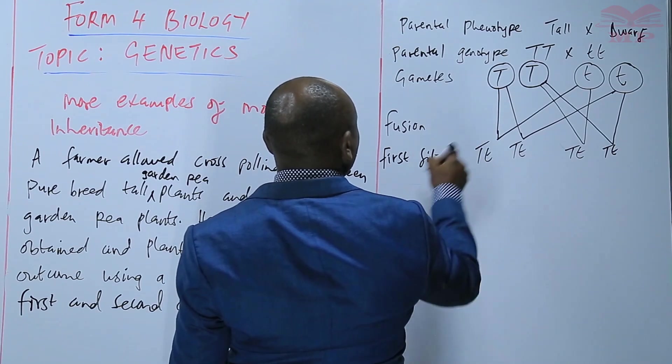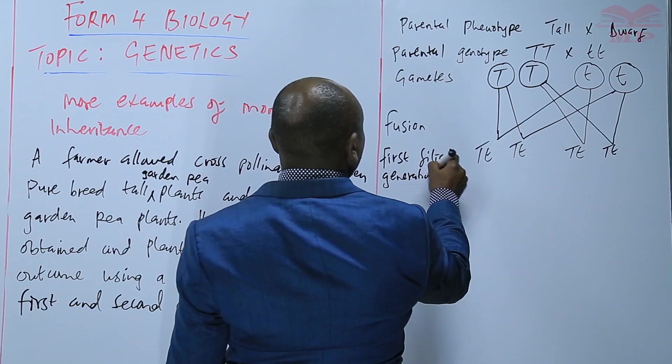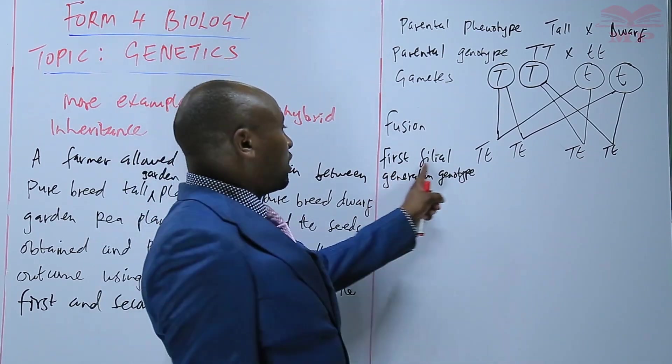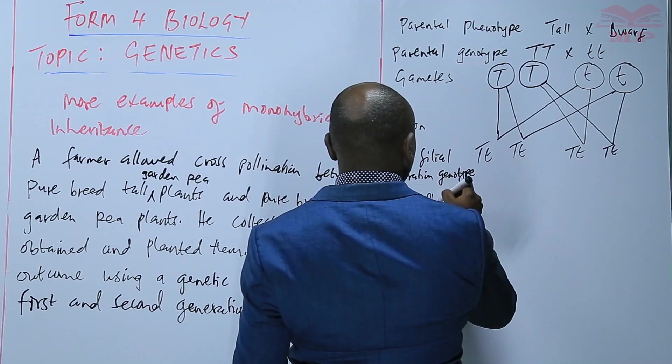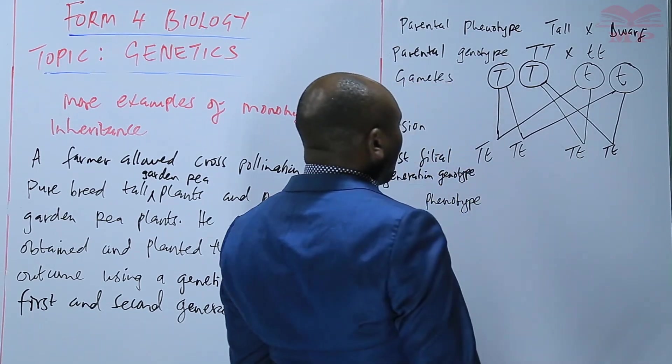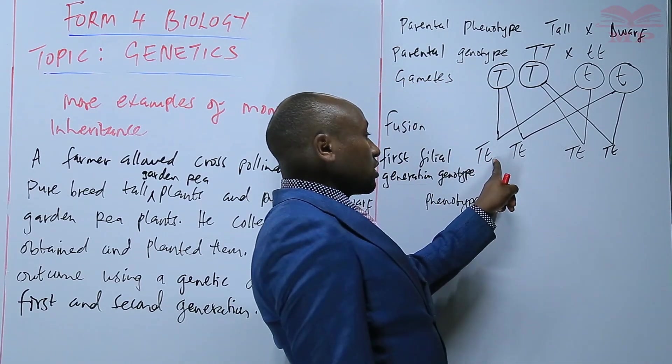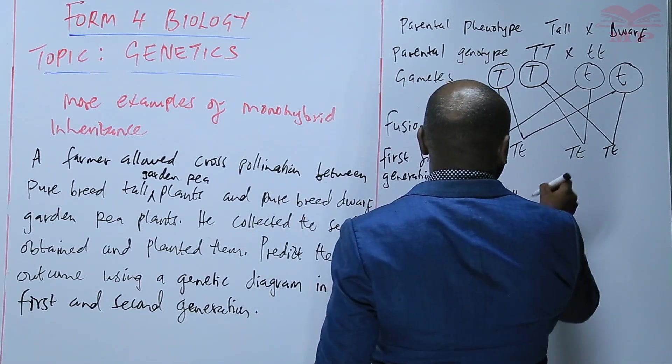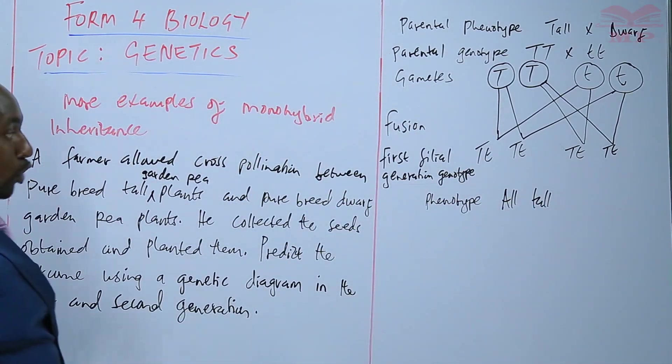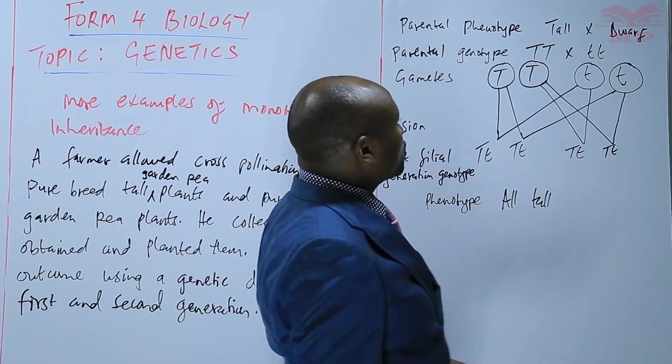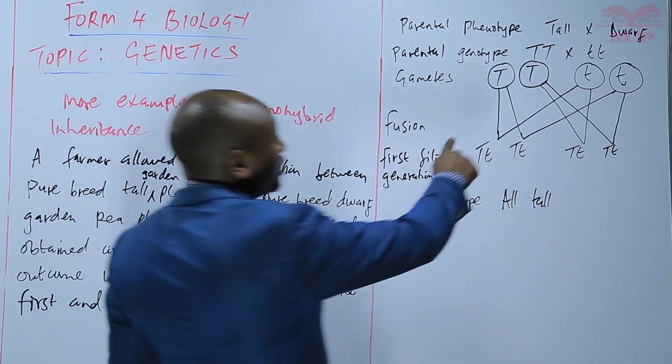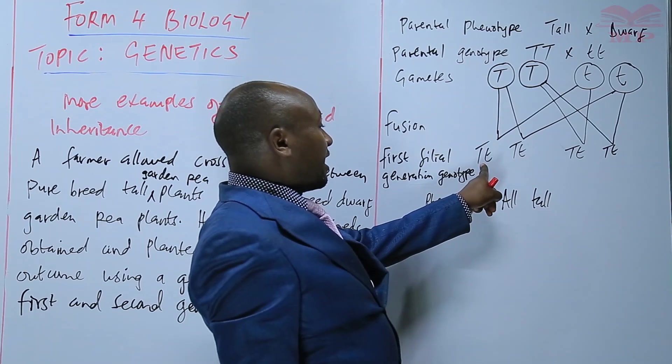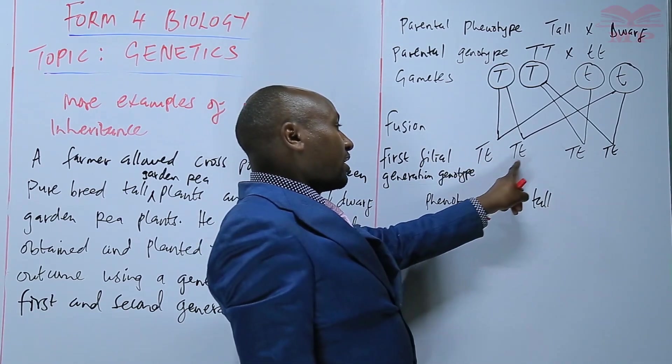The phenotype of that generation is tall because tallness dominates over shortness. This is tall, this is tall, this is tall. So the phenotype is that all were tall. That explains why in the first generation if you cross a tall and a dwarf, you will get all tall because you get tall in a heterozygous state whereby tallness dominates over dwarfness.